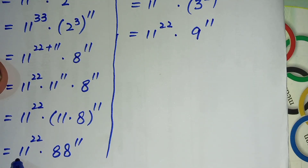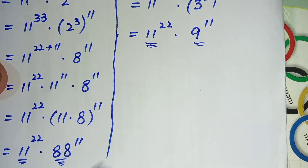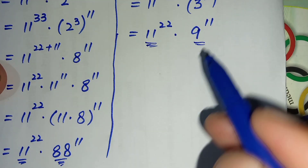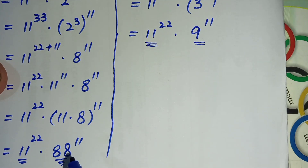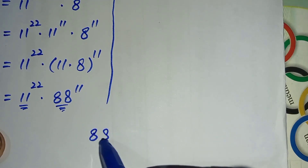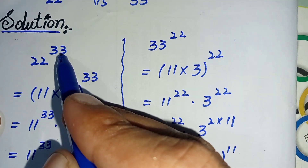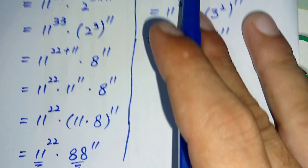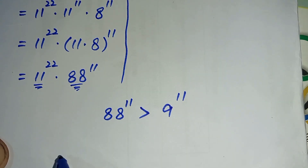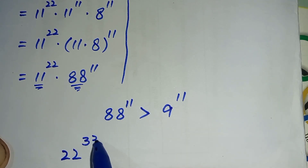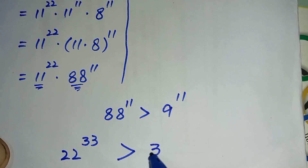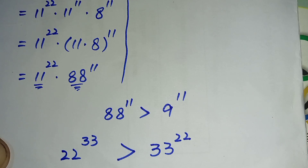Now look at both the numbers. The term 11 to the power 22 is the same in both numbers. Now we compare the remaining terms: here we have 88 to the power 11 and here we have 9 to the power 11. By comparing these two numbers, we know that 88 to the power 11 is always greater than 9 to the power 11. So it means that 22 to the power 33 is greater than 33 to the power 22. This is our final answer.